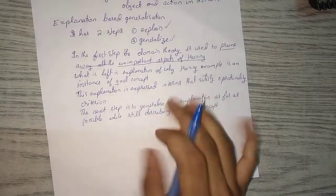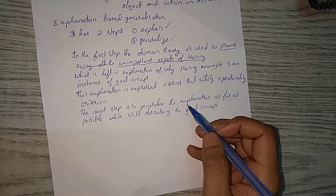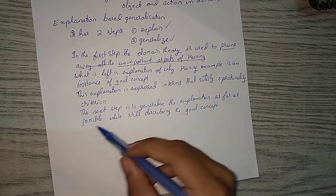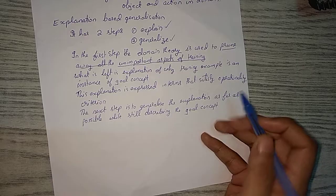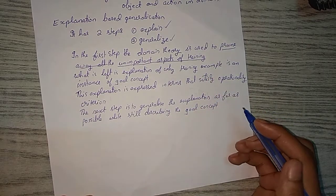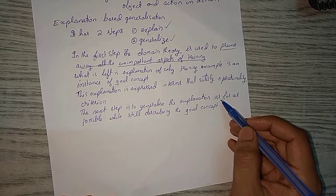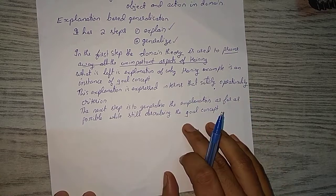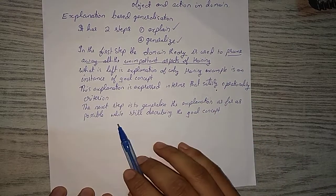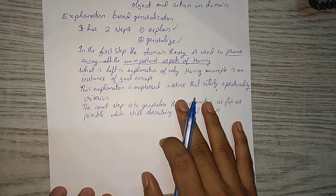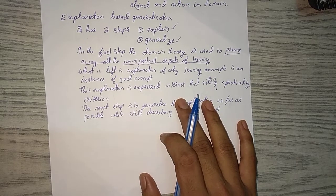The next step is to generalize the explanation as far as possible while still describing the goal concept. Here we generalize why we chose that particular rule — we could have chosen any other rule, so we generalize that choice. This is explanation-based generalization. Thank you for watching; please like, share, and subscribe.